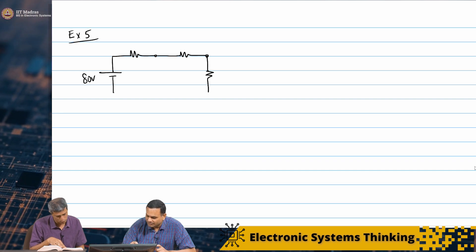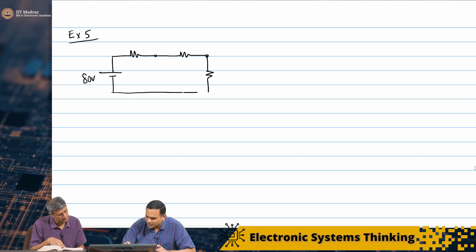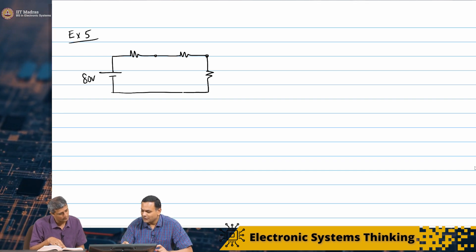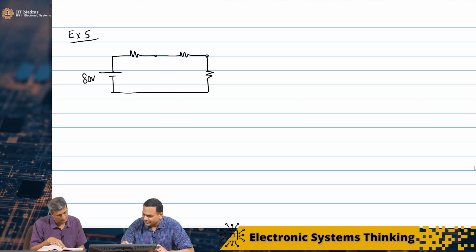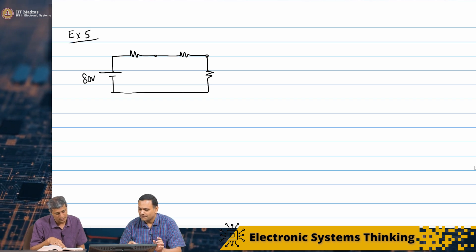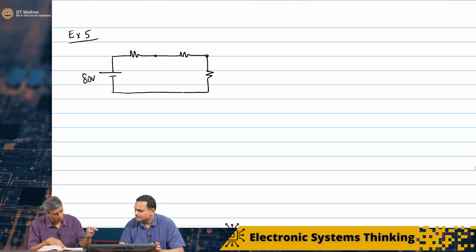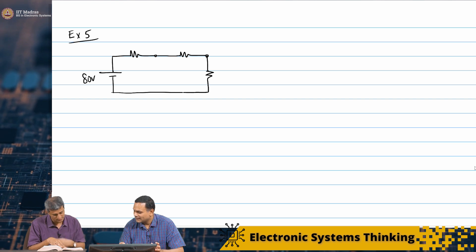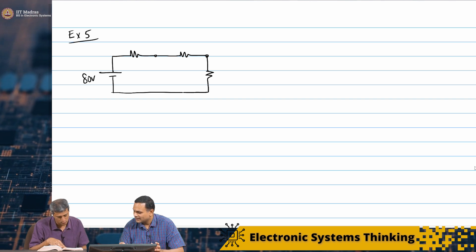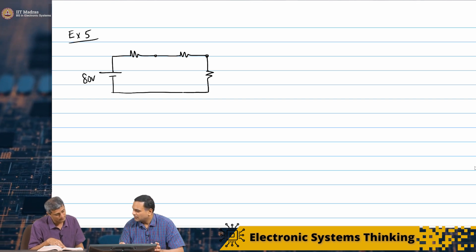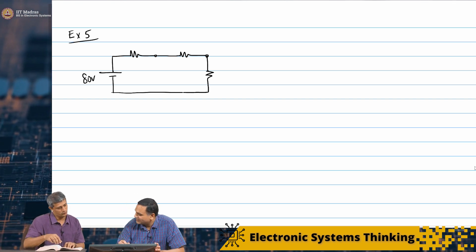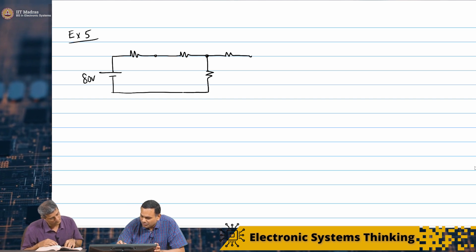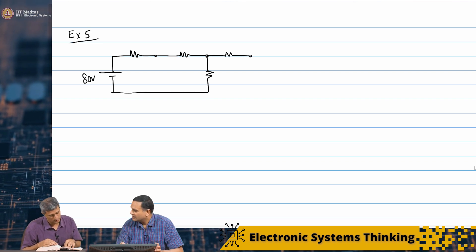Can I close the loop here? Now you can close the loop, yes. I will take the value of the resistors later. Then there is, from the 10 ohm there on top, you go in series with the 20 ohm.